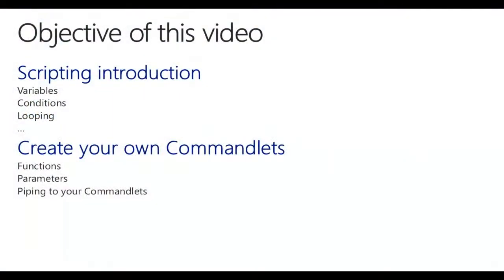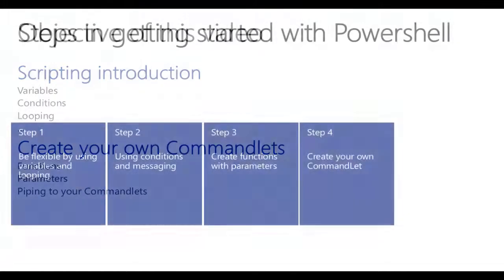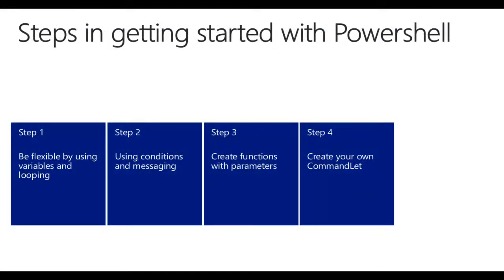The objective of this video is to tell you more about scripting: how to use variables, conditions, and looping, and how to create your own commandlets — which means how to create functions, use parameters in these functions, and how to pipe into the commandlets you have built. We're going to do that in four easy steps: first, variables and looping; second, conditions and displaying messages; third, creating a function with parameters; and finally, building our own commandlet to execute a code unit.